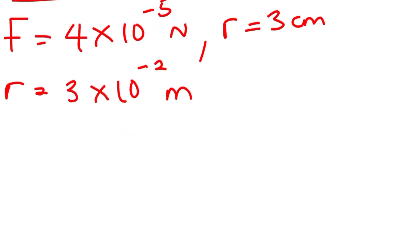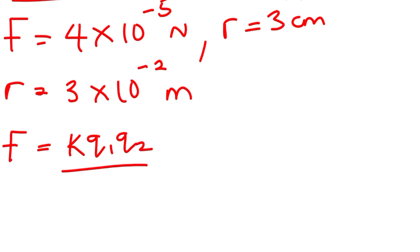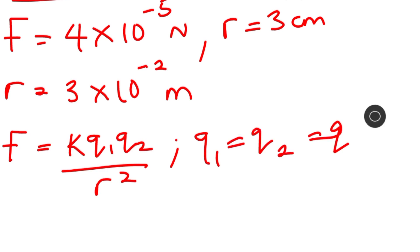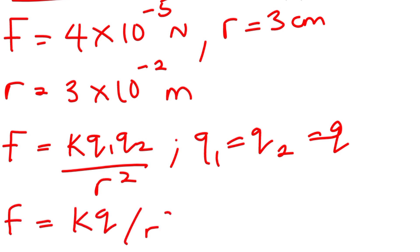We know that F equals k times q1 times q2 over r squared. But in this case, q1 equals q2 equals q, so we can write F equals k times q squared divided by r squared.